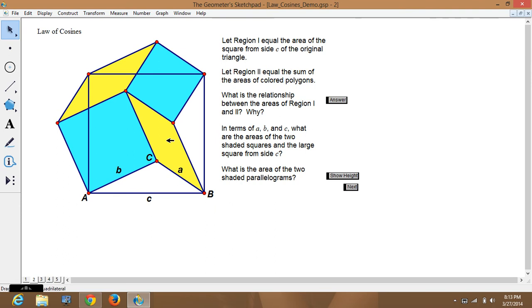Okay, so we're on the next page and it colored it yellow properly. It says, let the region one equal the area of the square from side C. So, here's region one of the original triangle. Let region two equal the sum of all the colored polygons.